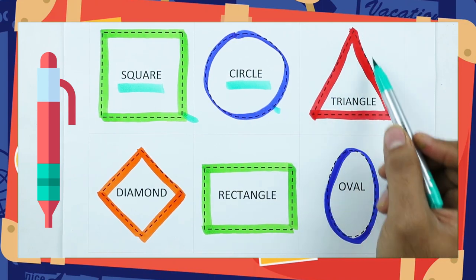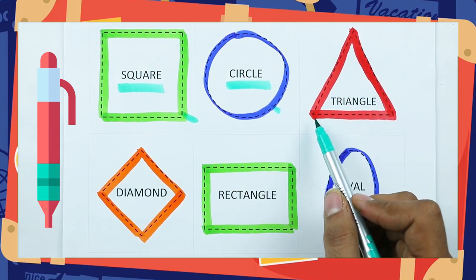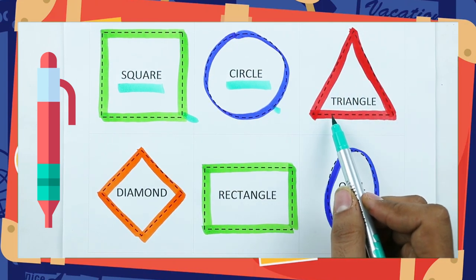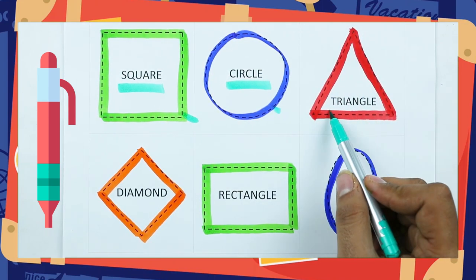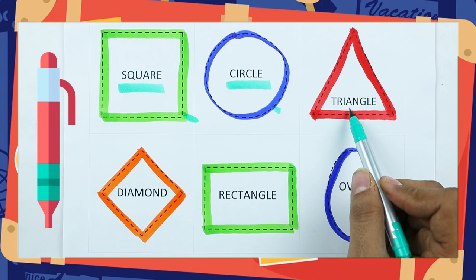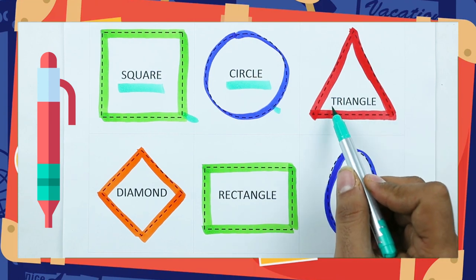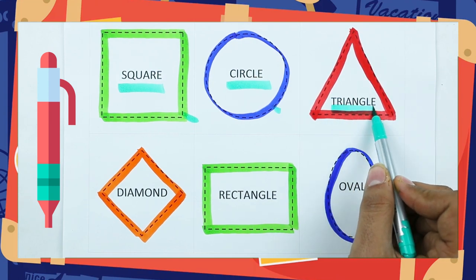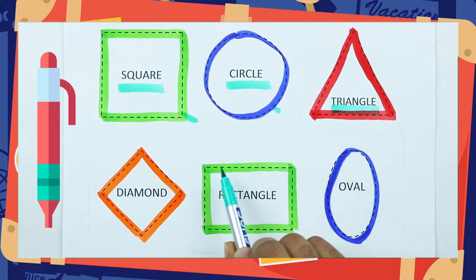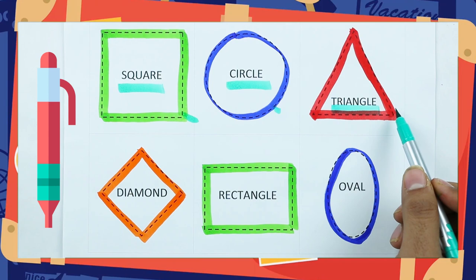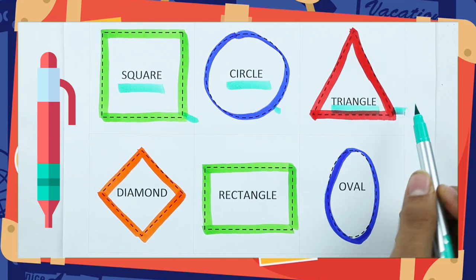Which shape is this? Triangle. T-R-I-A-N-G-L-E. It's a triangle, with red color.